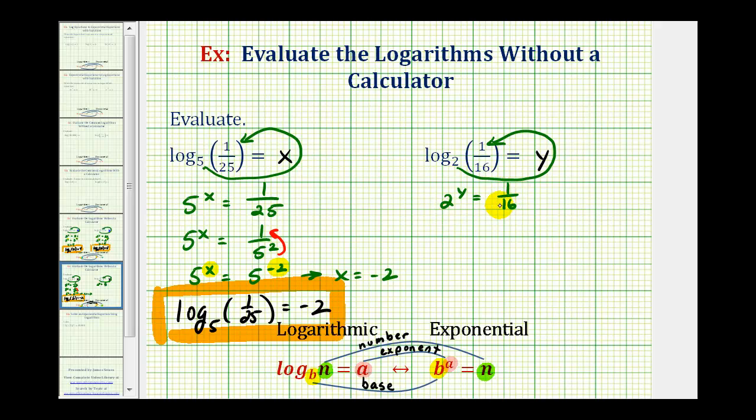We want to write the right side of this equation as two raised to some power. Let's ignore the fraction for a moment and take a look at sixteen. Sixteen is equal to four times four, and four is equal to two times two. So sixteen is equal to two to the fourth. So we can write this as two to the y equals one over two to the fourth. And then again, using our properties of exponents, if we move this up to the numerator or take the reciprocal, it's going to change the sign of the exponent. So we'd have two to the y equals two to the negative fourth power.